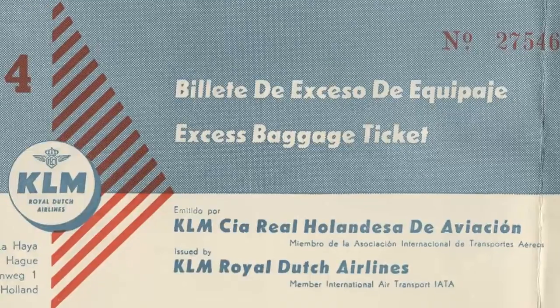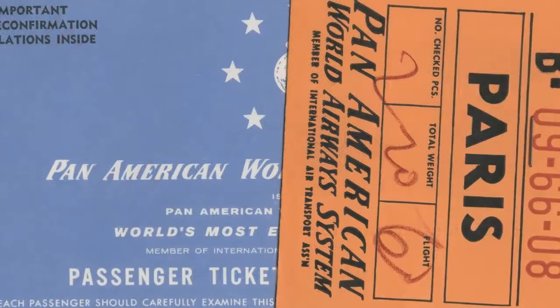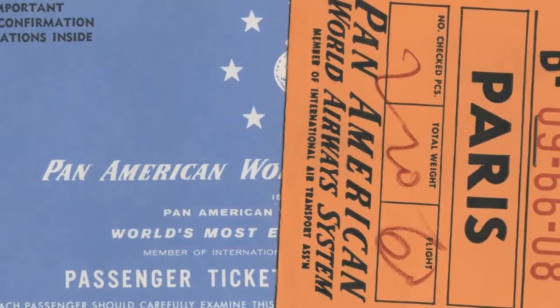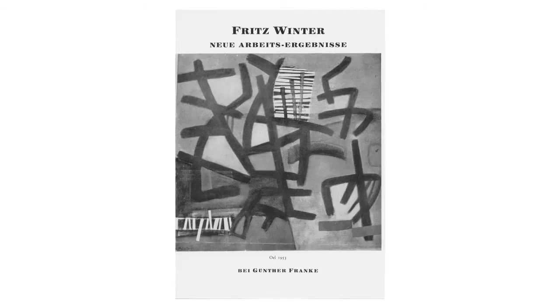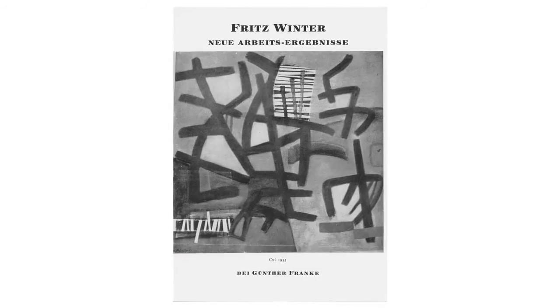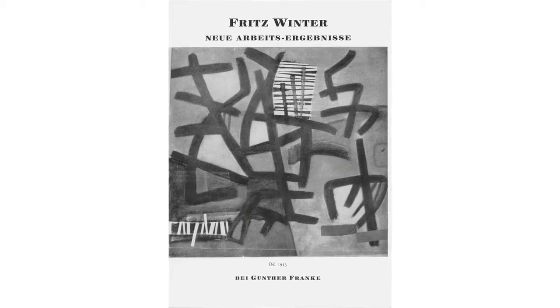He researched these exhibitions by traveling throughout the U.S. and throughout Europe. We know that he went to galleries and took notes of what he saw, picked up brochures, then contacted these artists, added their works to these exhibitions, and built the museum's contemporary holdings based on his selections for these exhibitions.